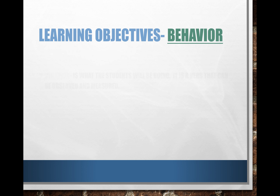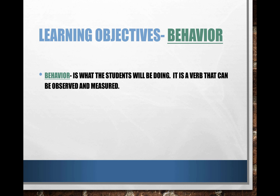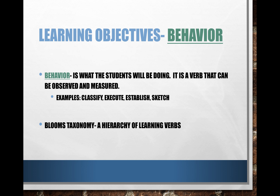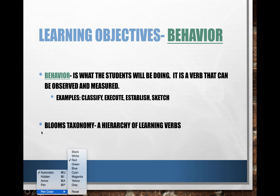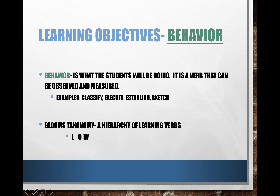Behavior is what the students will be doing — it is a verb that can be observed and measured. Some examples of behaviors we can witness with our students are things like classify, execute, establish, or sketch. These verbs come from something specific called Bloom's taxonomy — this is definitely a vocab word, so make sure you have it written down because it's really important that you understand what Bloom's taxonomy is.